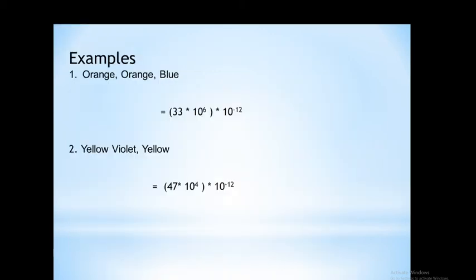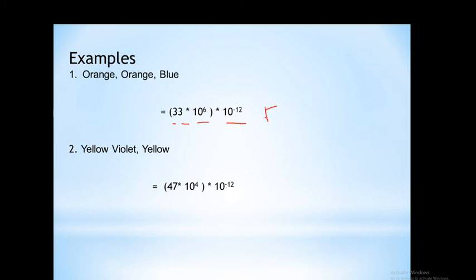Taking the example orange, orange, blue: orange gives the first significant digit 3, the second orange gives the second significant digit 3, and blue is the multiplier giving 10 to the power 6. Multiplying by 10 to the power minus 12 to convert to picofarad, the resultant value is 33 into 10 to the power minus 6, which is 33 microfarad.